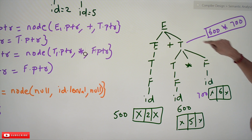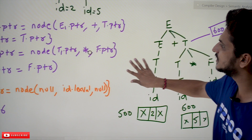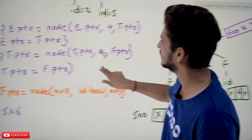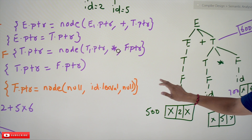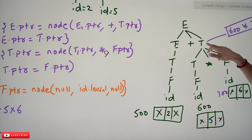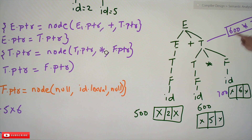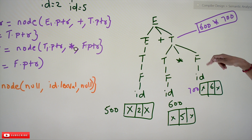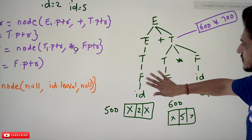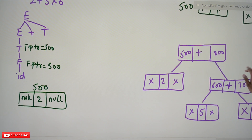When T → T1 * F finishes, the condition T.ptr = node('*', T1.ptr, F.ptr) is executed. It creates a new node with star in the middle, left subtree pointing to the node at 600 (value 5) and right subtree pointing to the node at 700 (value 6). This is how we construct the abstract syntax tree. The final abstract syntax tree has the plus node at the root with address 800, pointing left to 500 and right to the star node.